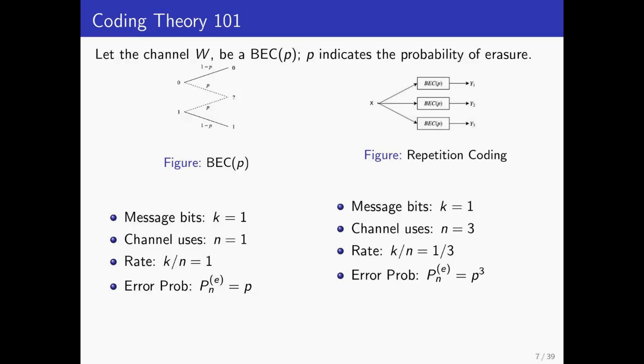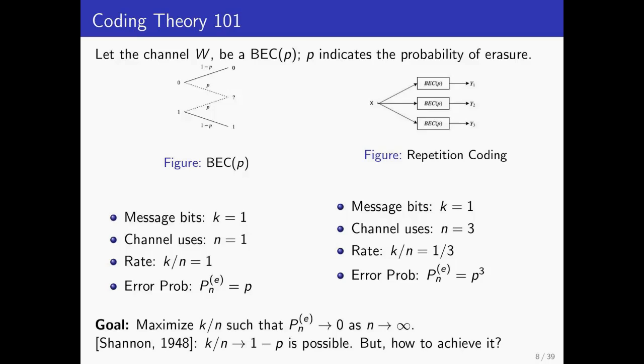So a natural question to ask is, for a message of size K, what is the minimum number of bits N that is required to ensure that the original message is recoverable with high probability? Shannon's groundbreaking and far more general result in an asymptotic setting, a ratio of K over N called the rate of 1 minus P is possible, but it's not clear how to achieve this.